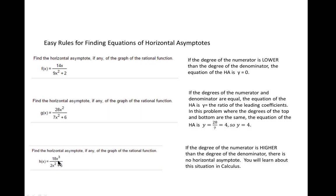Finally, when the degree of the numerator is greater than the degree of the denominator, then you don't have a horizontal asymptote. What you do have is a situation you'll discuss if you get to calculus. So you don't even have to worry about that here.